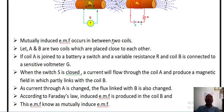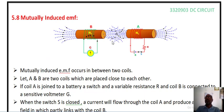When there is a change in current passing through one coil, it will induce an EMF in the second coil. This property is called mutually induced EMF.